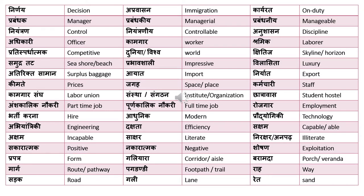The next word is 'anushasan,' which means discipline. 'Adhikari' means officer. 'Kamgar' is worker and 'shramik' is laborer. There is a fine difference: a laborer works in a labor-intensive setting, while a worker is someone like a technician, electrician, or mechanic. Such people are called 'kamgar' or 'mazdoor.' 'Mazdoor' or 'shramik' is mostly used in a labor context. These words could be considered synonymous with a very small difference.